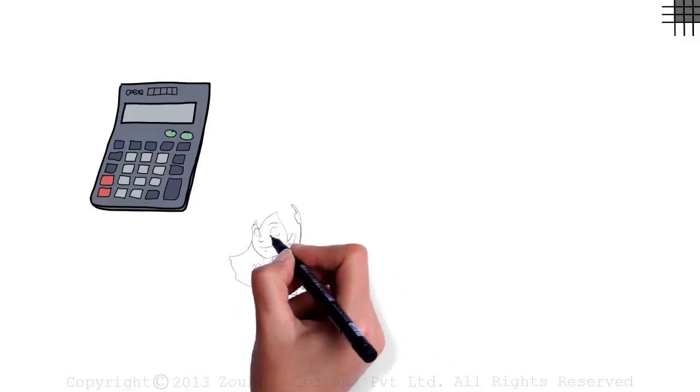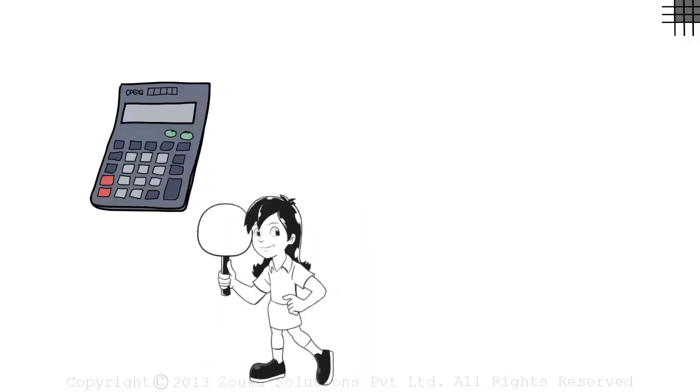The easiest way to find the square root of any number is to use a calculator. But if we are asked to find the square root of a number without using a calculator, there are two ways in which we can do it.